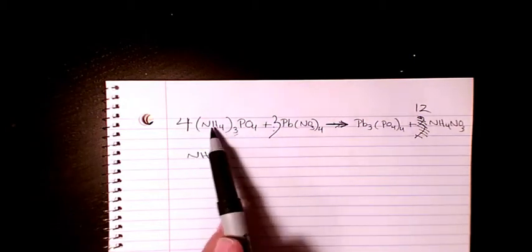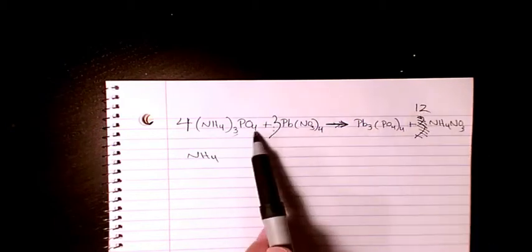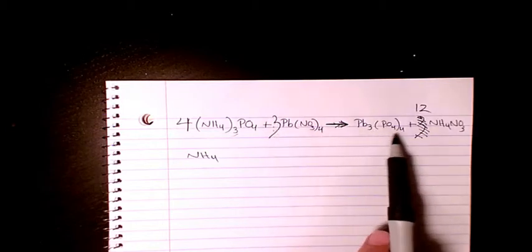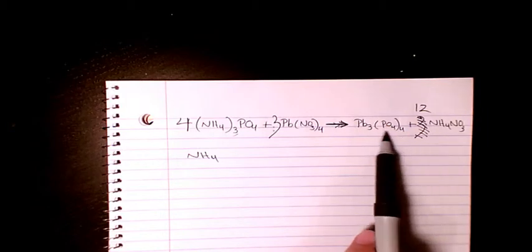That's the whole thing is balanced right now. NH4 is balanced, 12 and 12. NO3 is balanced, 12 and 12. Four times three, PB is balanced, three and three. And PO4, we have four of them here and we have four of them here, so that's balanced.